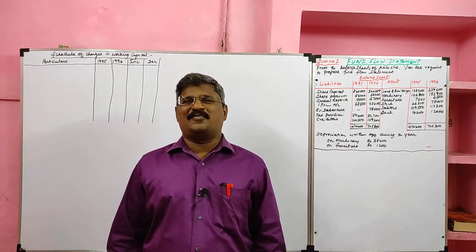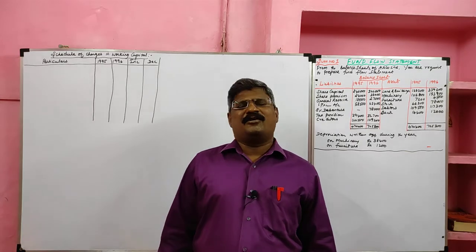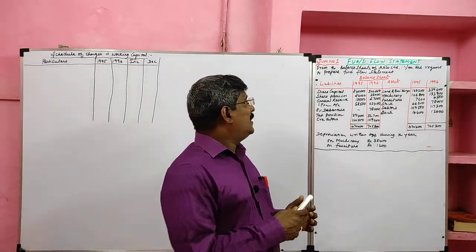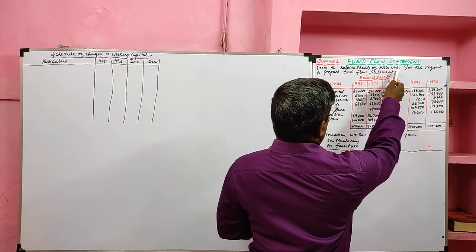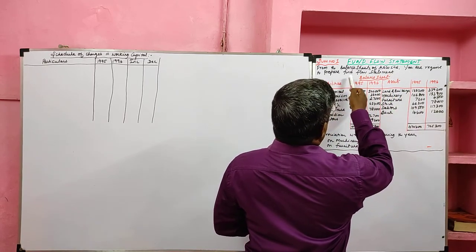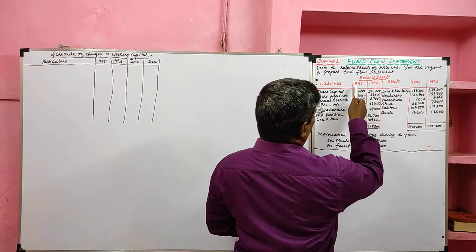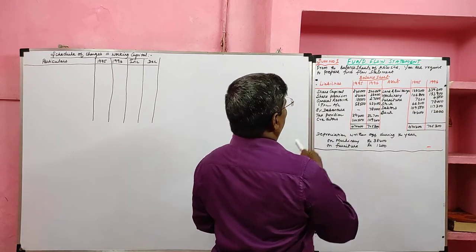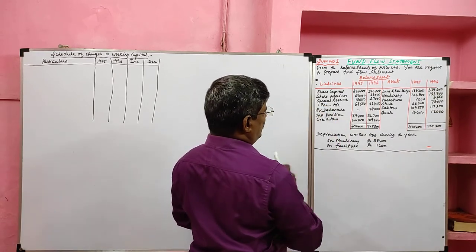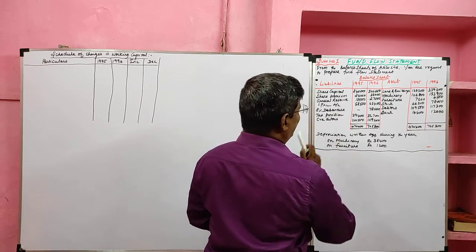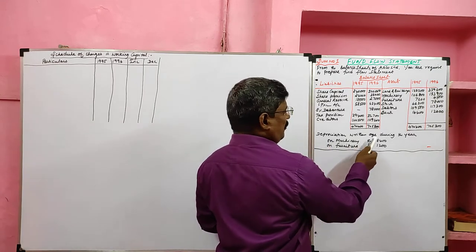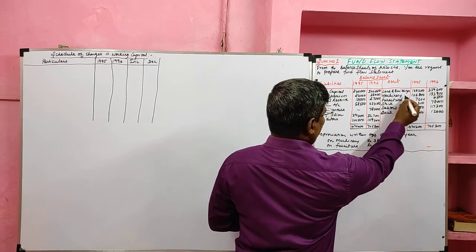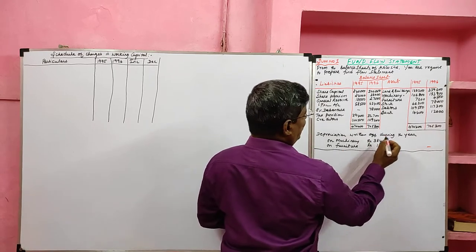Students, today we are going to learn a comprehensive problem on fund flow statement. Here we are going to prepare a schedule of changes in working capital, adjusted profit and loss account, and fund flow statement. Look at problem sum number one: from the balance sheet of A and Company Limited, you are required to prepare a fund flow statement. The balance sheets of 1995 and 1996 are given. Adjustments include current year depreciation on machinery of rupees 38,400 and on furniture depreciation of 1,200.